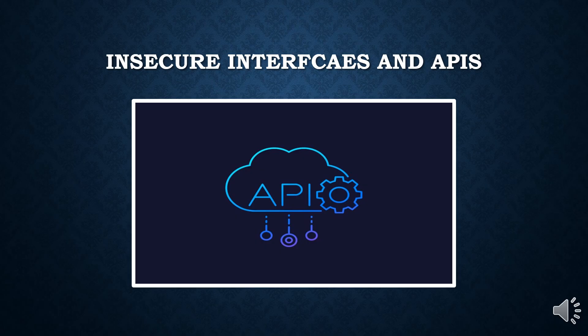Top Threat 4: Insecure Interfaces and APIs. Cloud service providers, enterprise vendors, and internal developers offer machine-to-machine application programming interfaces, or comprehensive suites of human user interfaces, typically for system controls.